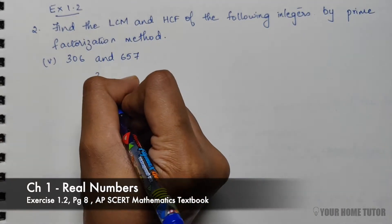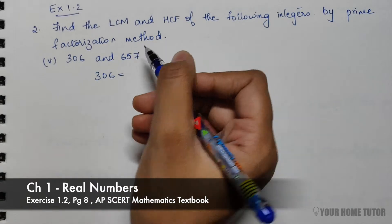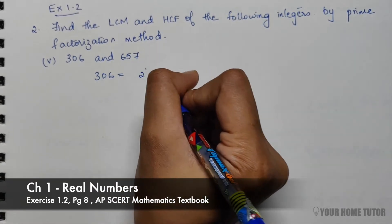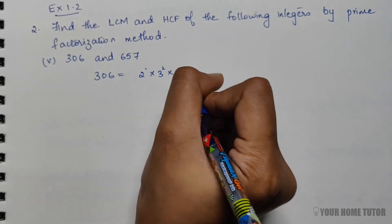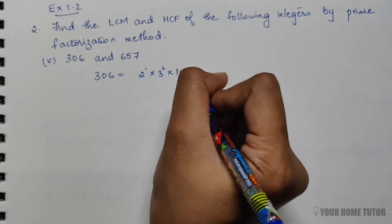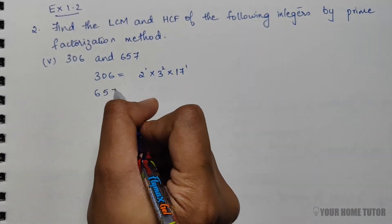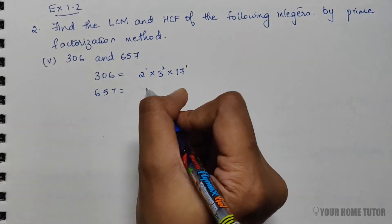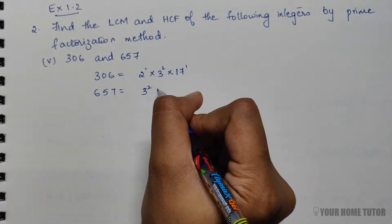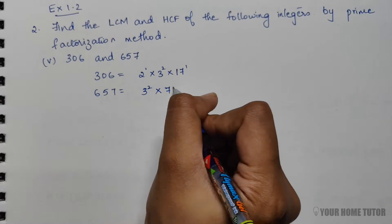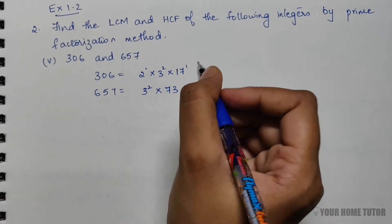For 306, the prime factors are 2^1 × 3^2 × 17^1. And for 657, the prime factors are 3^2 × 73^1.